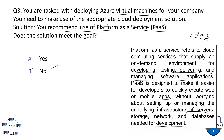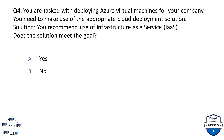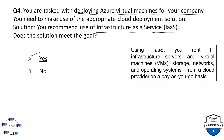Question number four: you are tasked with deploying Azure virtual machines for your company. You recommend use of Infrastructure as a Service (IaaS). Does this solution meet the goal? Yes, finally this solution meets the goal. When you want to deploy your own virtual machines and need the underlying infrastructure such as storage and networking, you need the IaaS solution. Using IaaS, you can rent IT infrastructure — servers, virtual machines, storage, network, and operating systems — from a cloud provider on a pay-as-you-go basis.